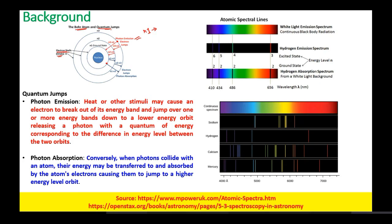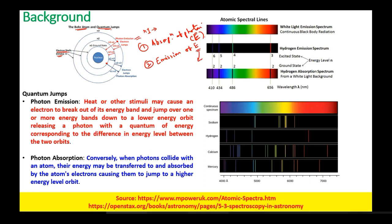So there are two things: absorption of a photon — which is nothing but energy E of the electromagnetic radiation — and the second is emission of energy. The emission of energy is usually in the visible light region. Similarly, the absorption of a photon is also in the visible light region.